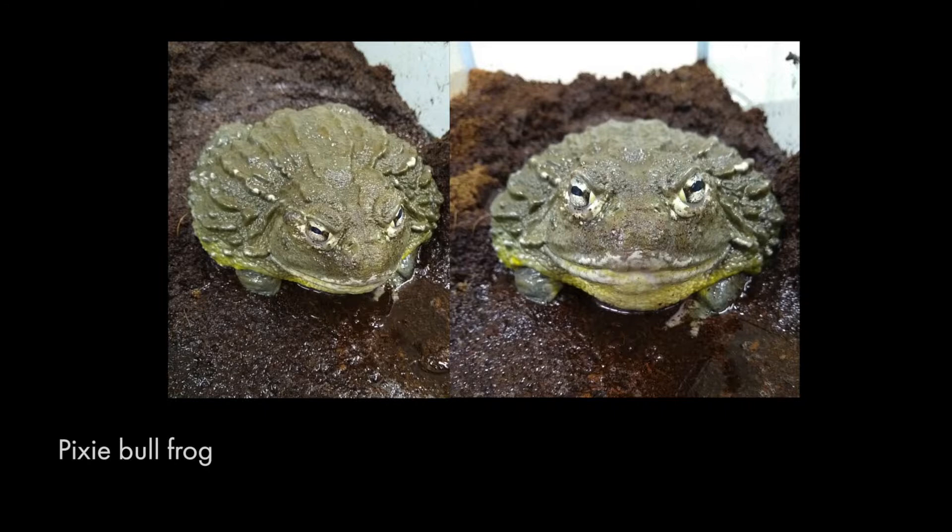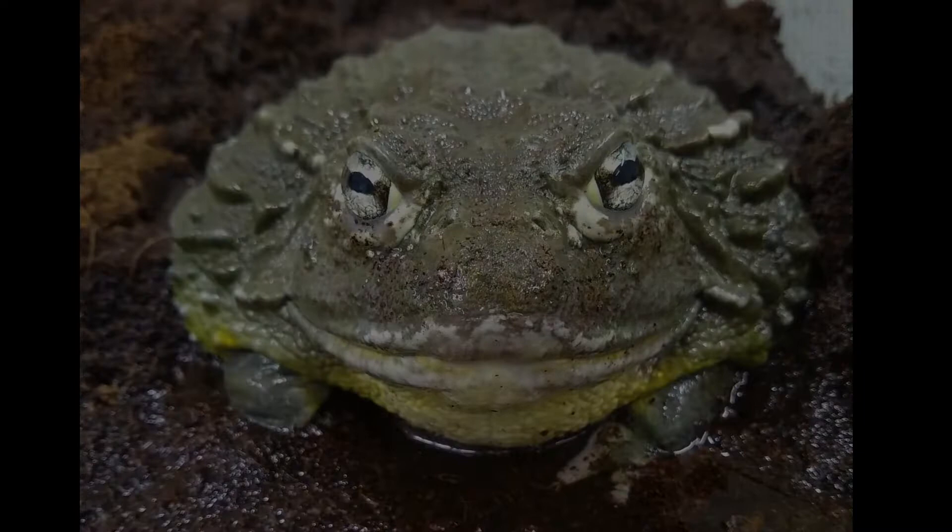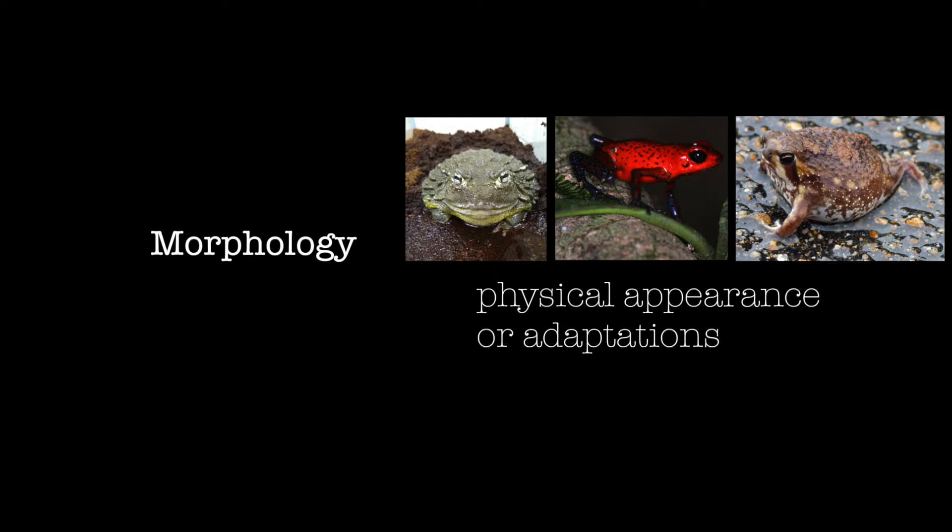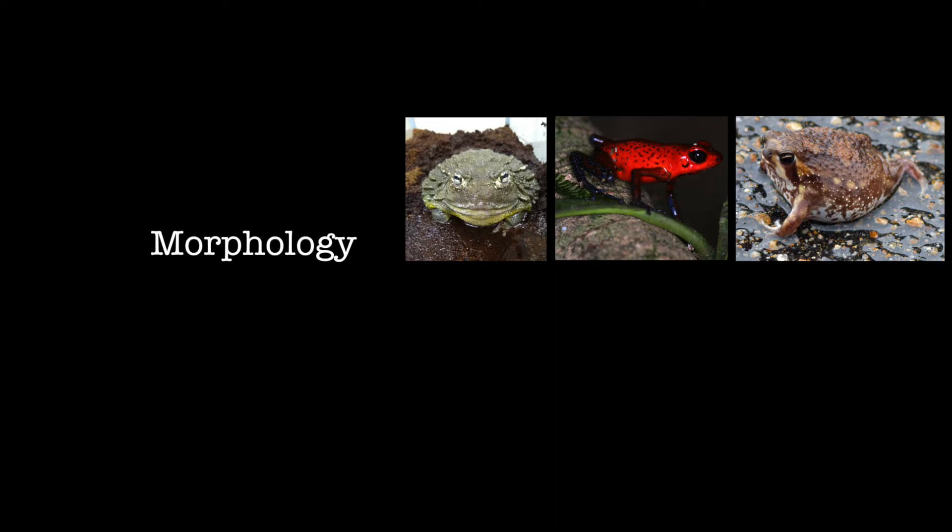All of the differences we just saw are differences in the morphology of a frog. Morphology means the physical way a frog looks. You might have also heard these physical features called adaptations. Frogs don't just differ physically — frogs also have different behaviors, and they even develop in different ways, which means that frogs have different life cycles.